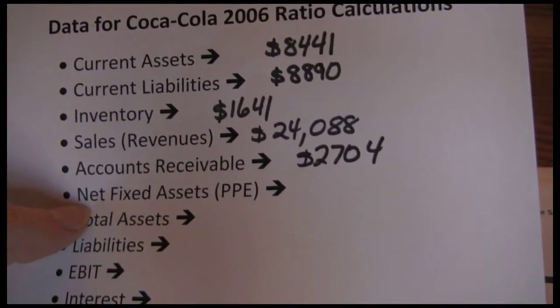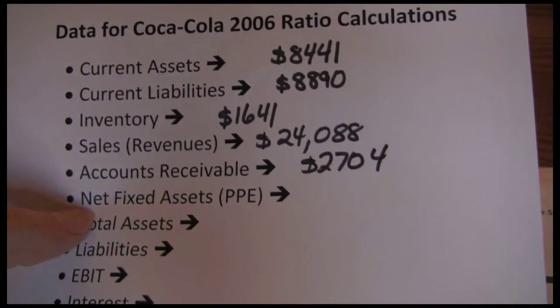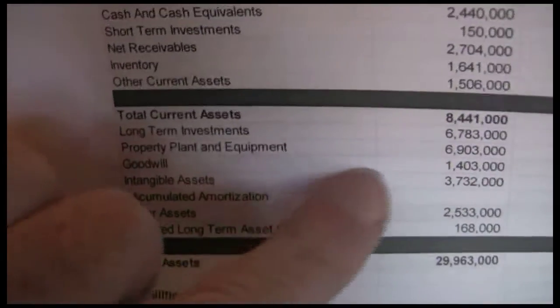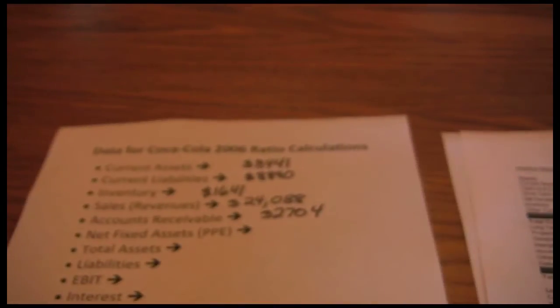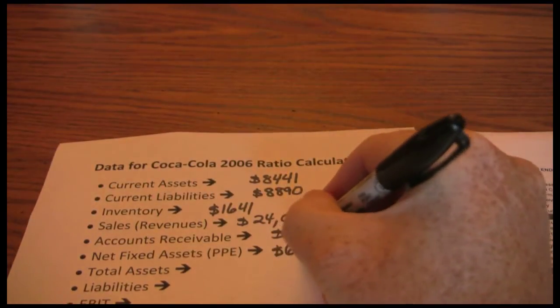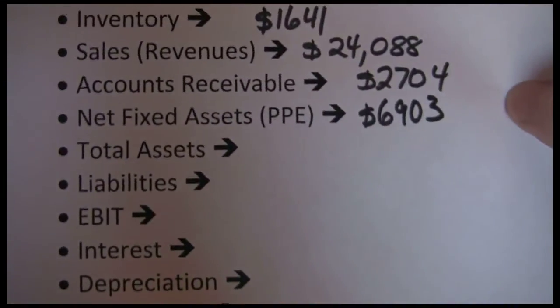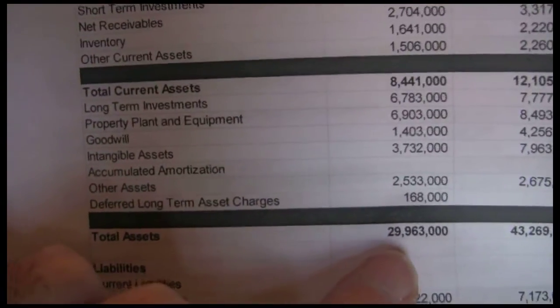Sometimes the balance sheet won't break out property, plant, and equipment, and then you can just use long-term assets. But if property, plant, and equipment are provided, that's what we want to use. Looking at our balance sheet, we see property, plant, and equipment at $6,903. Next up we have total assets — again a balance sheet item — total assets $29,963.